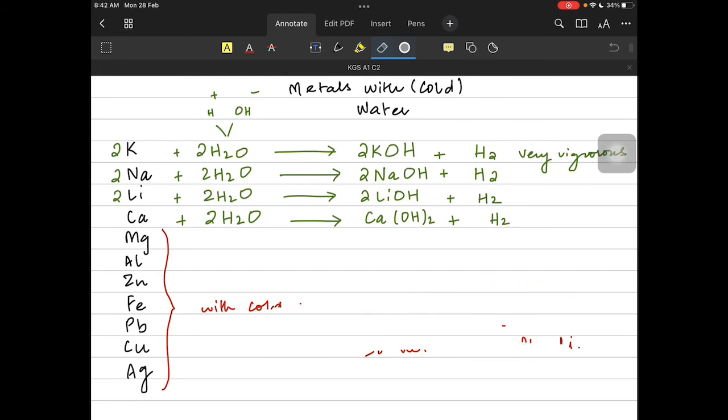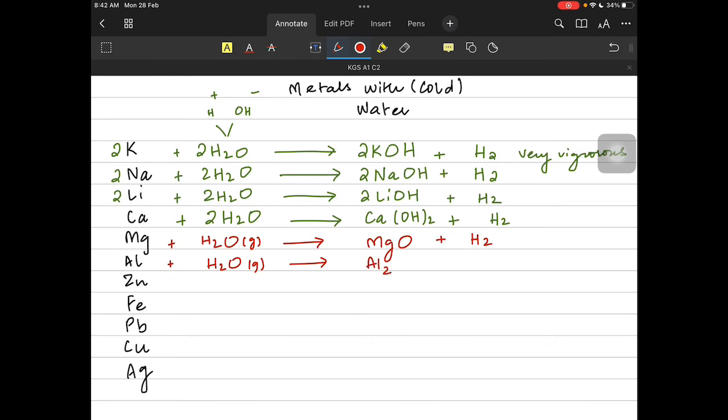Now let's talk about the unreactive metals. What would they do? Since they're not reacting with cold water, they react with steam which is obviously boiled water. And they don't make alkalies, instead they make their metal oxide. So magnesium makes magnesium oxide with steam. Aluminum makes aluminum oxide with steam and the hydrogen is obviously evolved in this case.